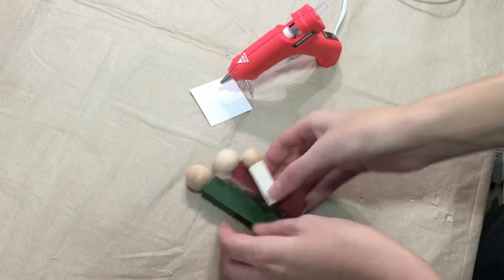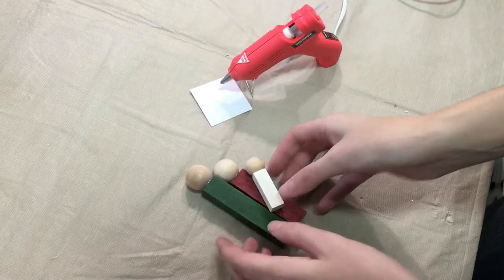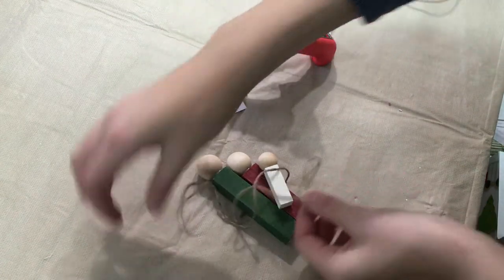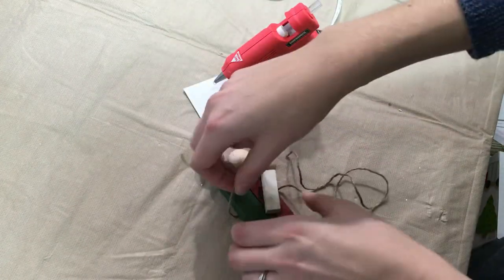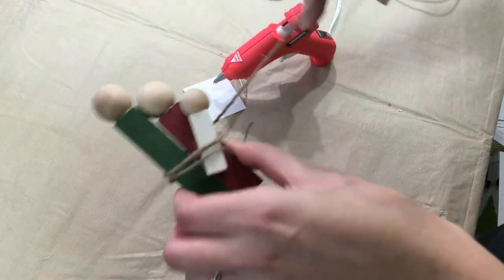Now all that's left is to clean up our hot glue and tie some twine around them. I'm using about 23 inches of twine. I'm leaving it long enough to where we can tie a bow in the front and then we're going to wrap it around them a couple times.